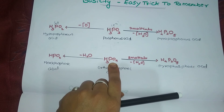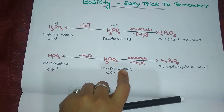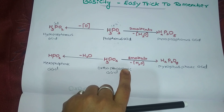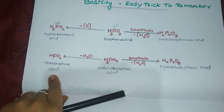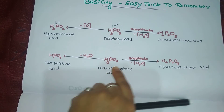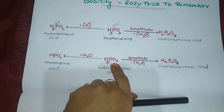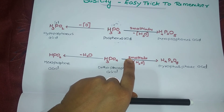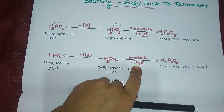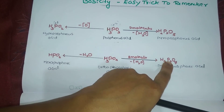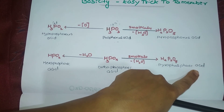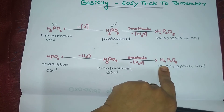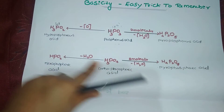For phosphoric acid (H₃PO₄, orthophosphoric acid): remove one water molecule and you get HPO₃ (metaphosphoric acid). Take two molecules of H₃PO₄ and remove one water molecule to get H₄P₂O₇ - pyrophosphoric acid. Since a water molecule is removed, it is called pyrophosphoric acid.